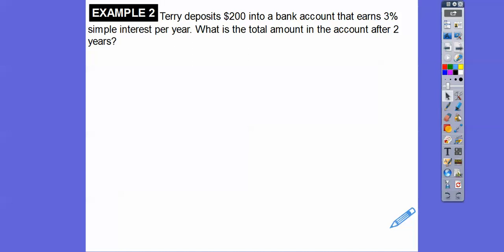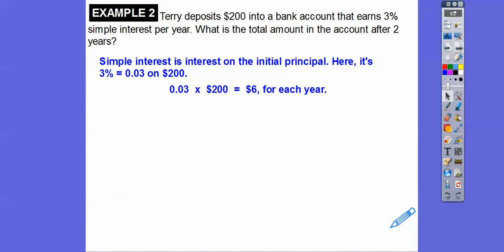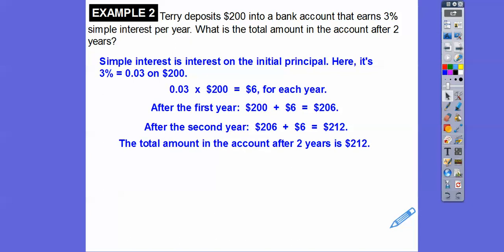So Terry deposits $200 into a bank account that earns 3% simple interest per year. What's the total amount of the account after two years? Simple interest is the interest on the initial principal, which is $200. Here it's 3%, 0.03 of 200. So 0.03 times 200 is $6 for each year. So it's each year, it's $6, $6, $6. After the first year, Terry's going to have $206 in there. After the second year, he's going to have that $206 plus another $6, so $212 after two years.